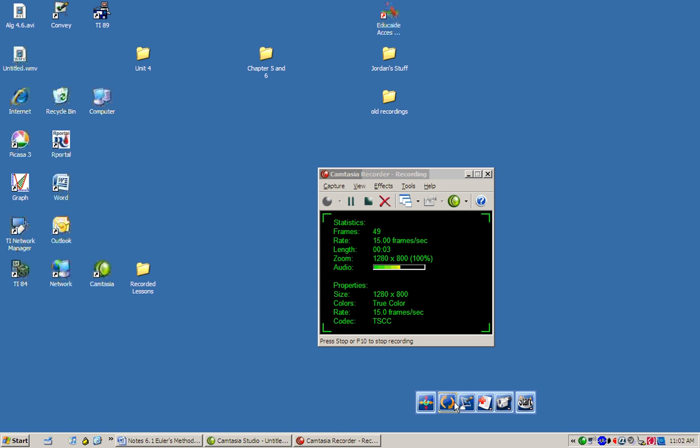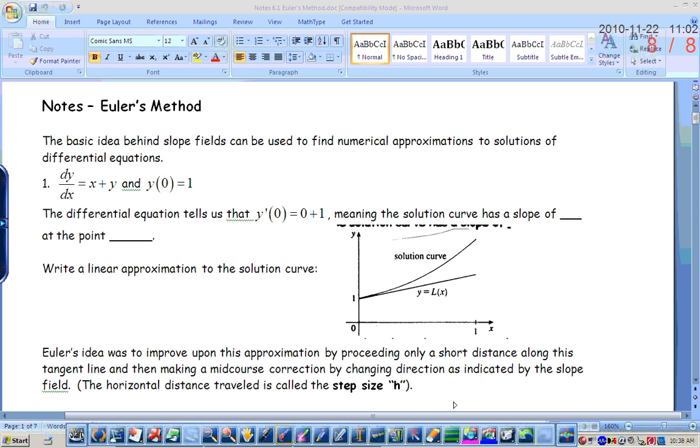Okay, so on Friday we talked about slope fields, and the purpose of a slope field is to be able to estimate the solution to a differential equation that is impossible to solve, or that you don't know how to solve at this point. And the very first one that we used on the notes was dy/dx equals x plus y. So I'm going to stick with that same differential equation, but we're going to look at it a little bit different way. We're going to look at it from a numerical approach as opposed to a graphical approach, and this is called Euler's method. The basic idea behind slope fields can be used to find numerical approximations to solutions of the differential equations.